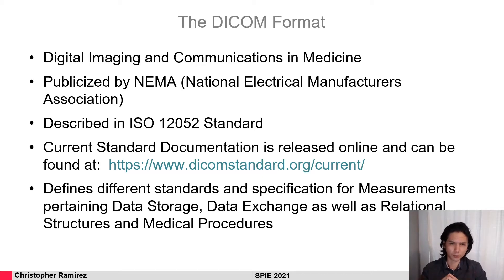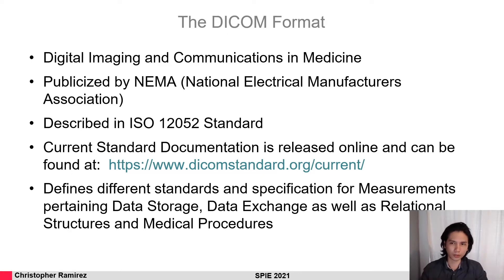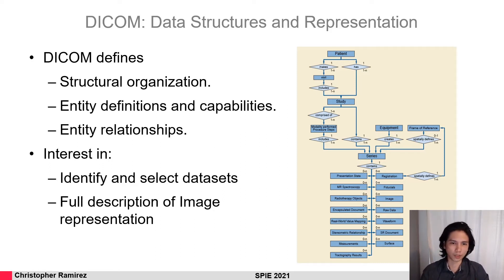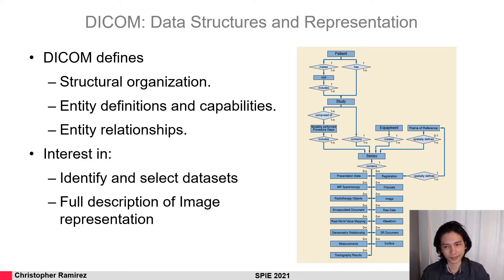The data standard itself is quite large — it has more than 10 parts and more than 1000 pages. It defines everything from data storage to how data is exchanged, how relational information and structures are stored, and how medical procedures need to be documented. In this paper we are only interested in the relational information of the data and how to interpret it. In the DICOM format the most important part for us is how DICOM defines its data structures and how it represents them. DICOM not only defines the structural information but also defines how entities interact with each other and what capabilities each entity must have. We are interested in how to identify and select datasets that belong together.